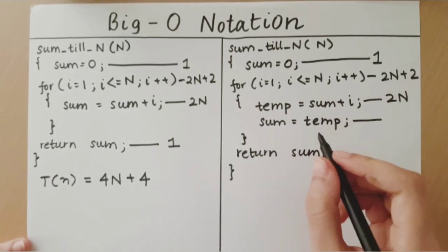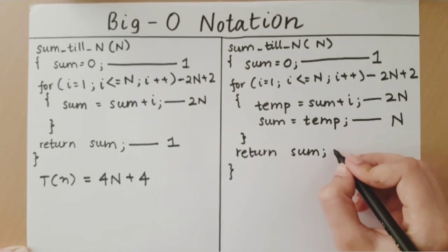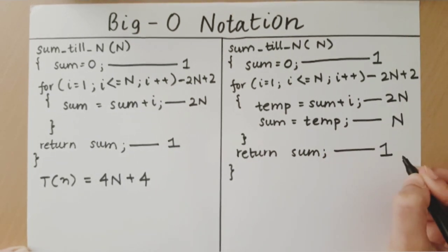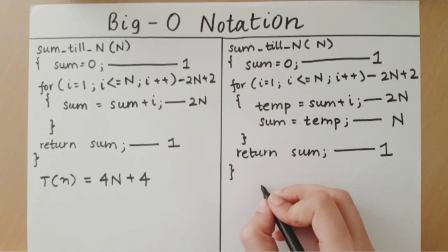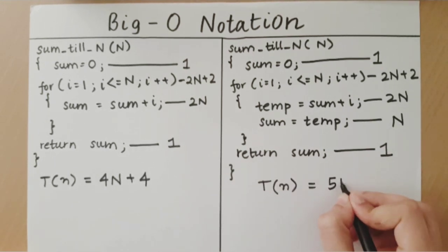This step, which takes 1 unit of time on its own, but since it happens n times, will take n units of time. Then we return the sum, which is another 1 unit of time. So now, if we add all these up, we can see that the time taken by this implementation is 5n plus 4.